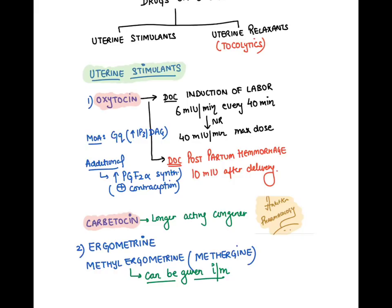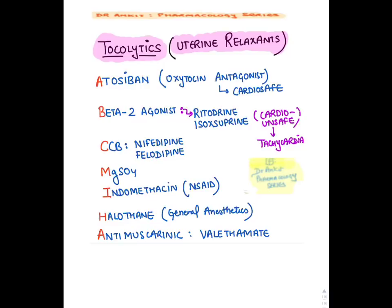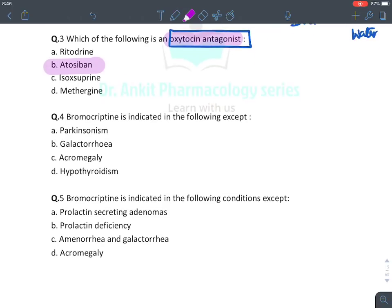In cases of oxytocin resistance, we give carbetocin, a prostaglandin F2-alpha analog. Ergometrine and methyl ergometrine are given only in postpartum hemorrhage — not for induction of labor because they cause fetal hypoxia. Drugs that relax the uterus are known as tocolytics, given in preterm deliveries. The mnemonic is ABC-MiHA: Atosiban (oxytocin antagonist, the most cardio-safe tocolytic), Beta-2 agonists (ritodrine, isoxsuprine, salbutamol), Calcium channel blockers, Magnesium sulfate, prostaglandin inhibitors like indomethacin, Halothane, and Antimuscarinic agents like valethamate. So the oxytocin antagonist is atosiban.